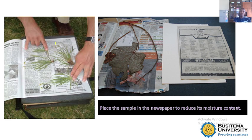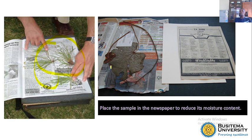You must put that particular plant in newspaper. When you put it in the newspaper, you display almost all the features you want to be seen — simple and easy for identification. Remember, if this process is done poorly, you will end up with poor results; for example, the leaves may end up rotting and identification may be difficult. We put the sample in newspaper to reduce the moisture content of that particular plant.